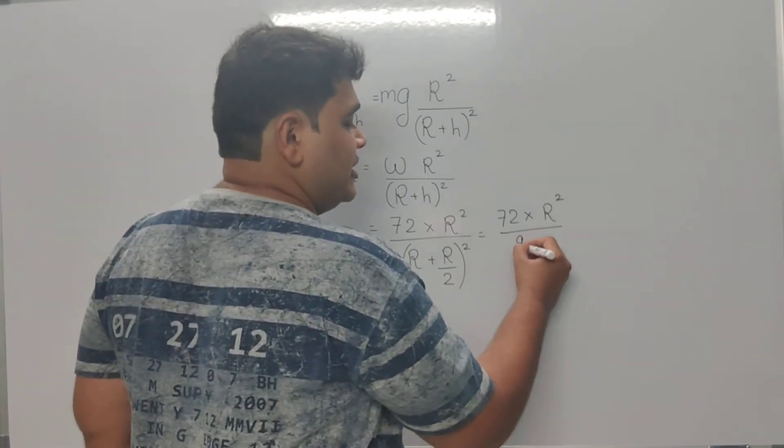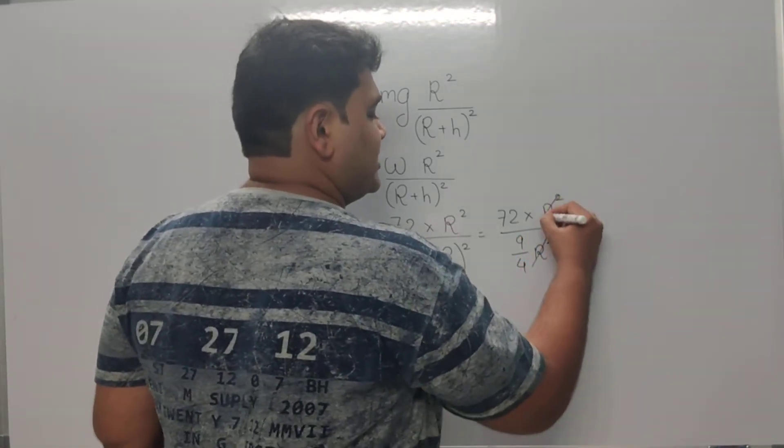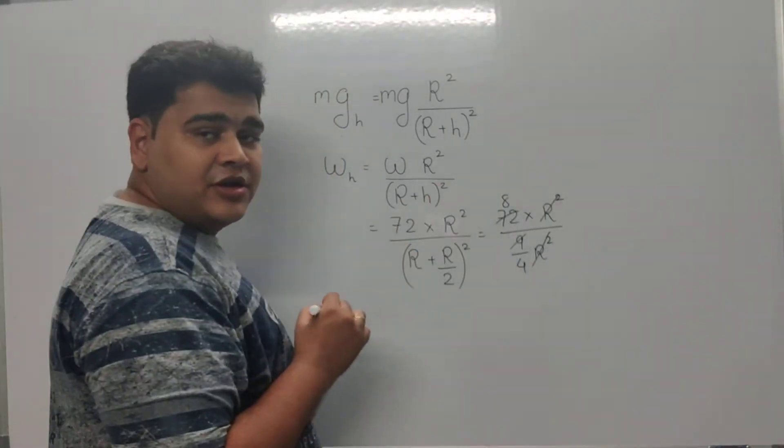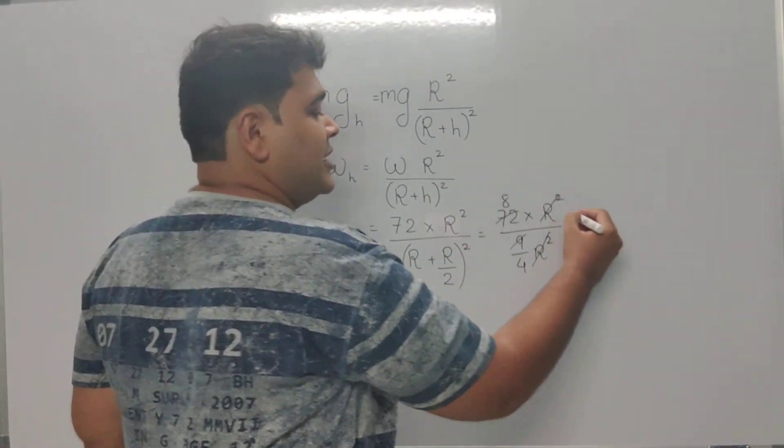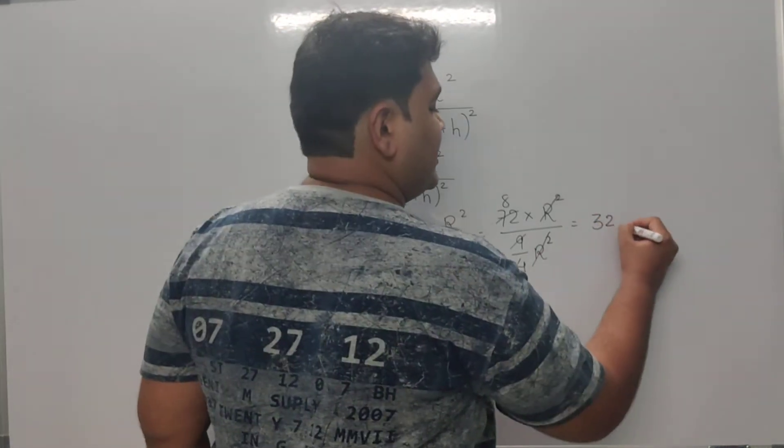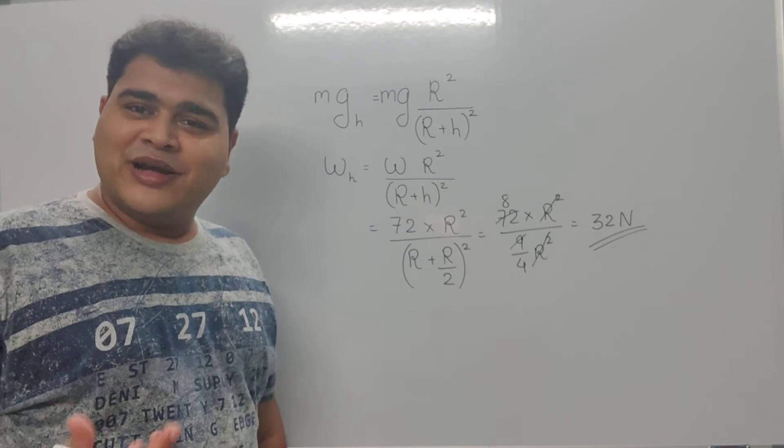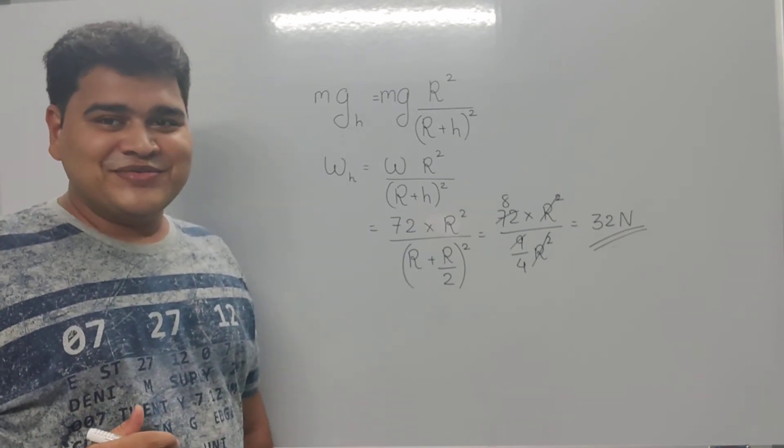Definitely this R² gets cancelled. We have 72 divided by 9, and this 4 goes up and gets multiplied. We get the final answer as 32 Newton. It's quite a simple sum of gravitation.